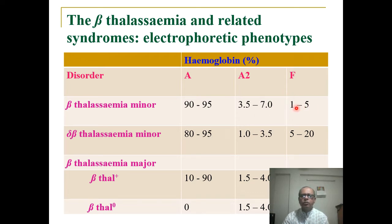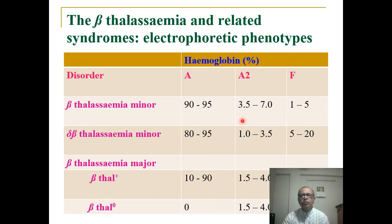In a normal adult, there is no hemoglobin F, but in beta-thalassemia minor, hemoglobin F is 1 to 5%. Regarding beta-thalassemia plus and beta-thalassemia zero: in beta-thalassemia plus, hemoglobin A is 10 to 90%, hemoglobin A2 is 1.5 to 4%, and hemoglobin F is 10 to 90%. In beta-thalassemia zero, hemoglobin A is 0%, hemoglobin A2 is 1.5 to 4%, and hemoglobin F is more than 90%. So in beta-thalassemia plus some hemoglobin A is present, but in beta-thalassemia zero there is no hemoglobin A.